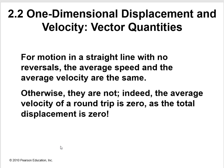For motion in a straight line with no reversals, the average speed and the average velocity are the same. Otherwise, they are not. Indeed, the average velocity of a round trip is zero, as the total displacement is zero.